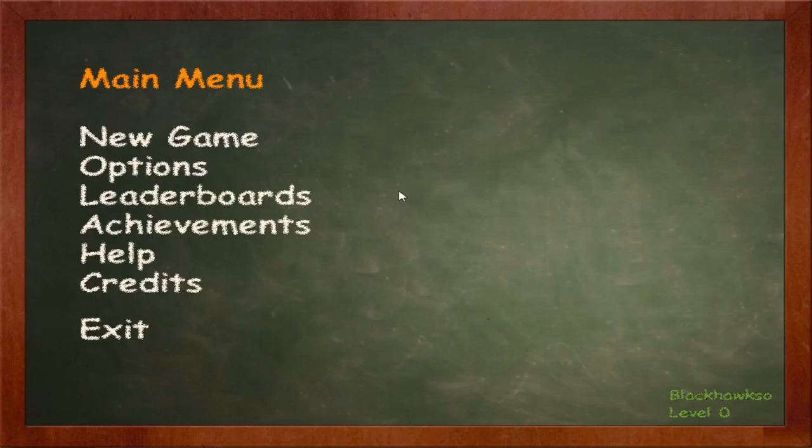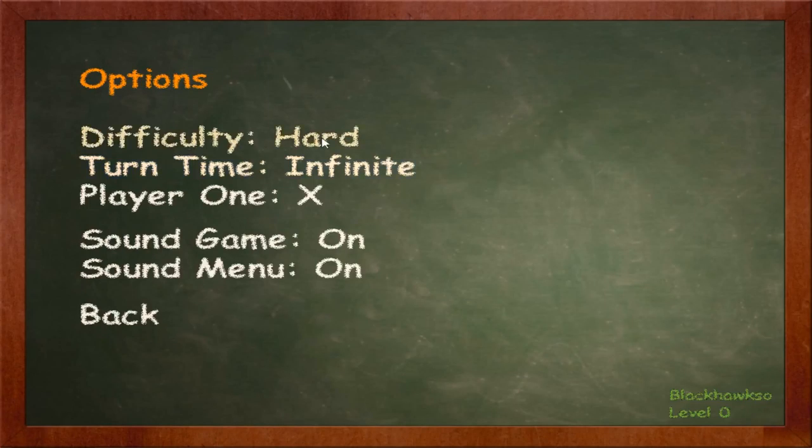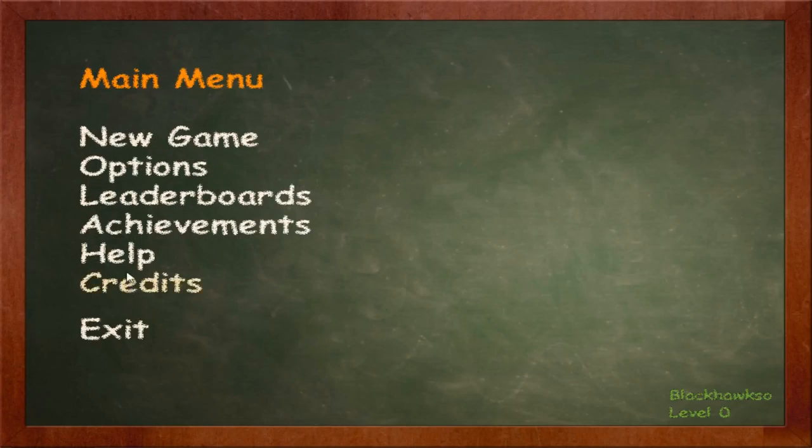So, here's the main menu. Now, one of the things that is very weird that you can't see in the recording is that this is running in a window, a bordered window. There is no options or anything to change that, it's just that's how it works. In the options menu, there's literally just difficulty settings, turn times, watch player 1 settings, sound and menu sound and that's it. Nothing else.